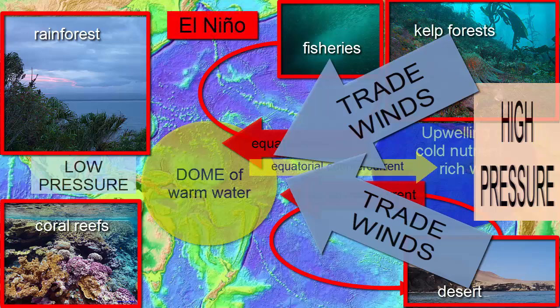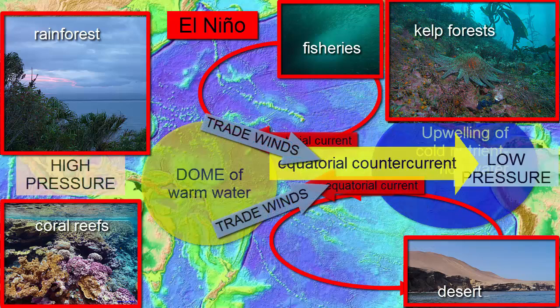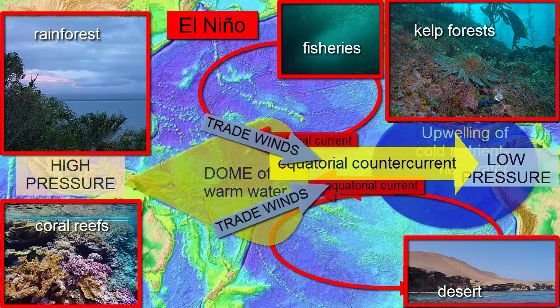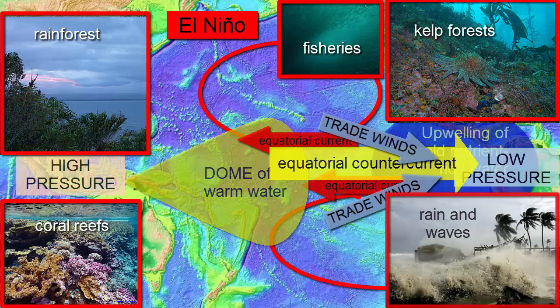An El Niño occurs when the pressure systems that cause the trade winds weaken or reverse. The normal trickle of a countercurrent intensifies as the entire dome of water in the west slides back over the water in the east. Air masses now move eastward, picking up moisture and dumping it in the desert regions of the eastern Pacific. These winds and storms increase wave energy and coastal erosion.